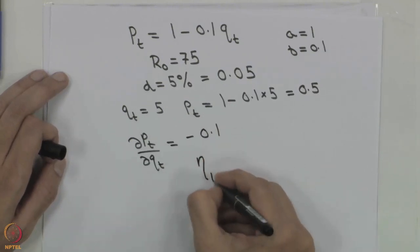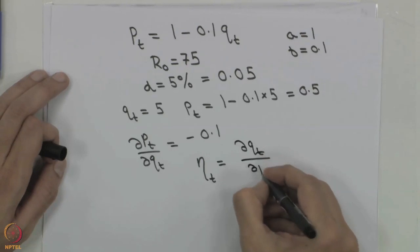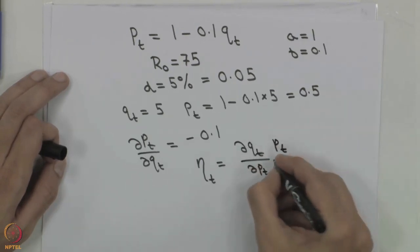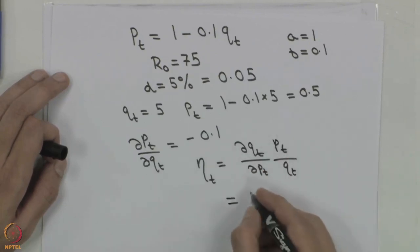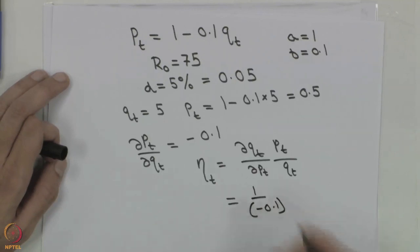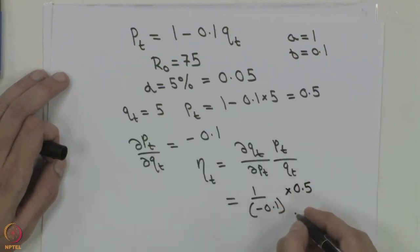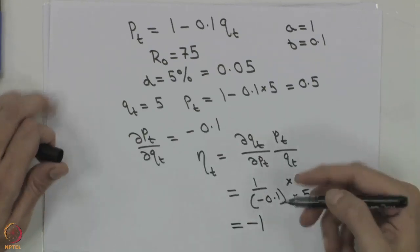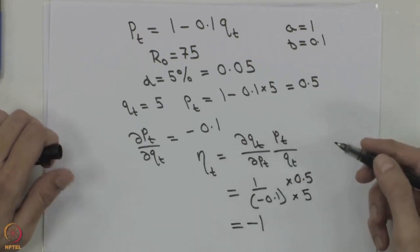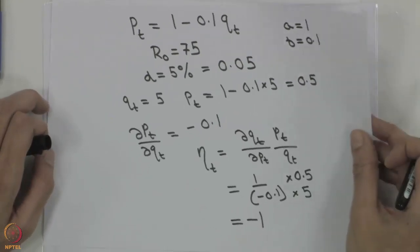The price elasticity of demand is (delta Q_t / delta P_t) times (P_t / Q_t), which equals (1 / minus 0.1) times (0.5 / 5). This gives elasticity equals minus 1, which implies that a 1 percent increase in price leads to a 1 percent decrease in quantity. So we have solved the first part of the question.